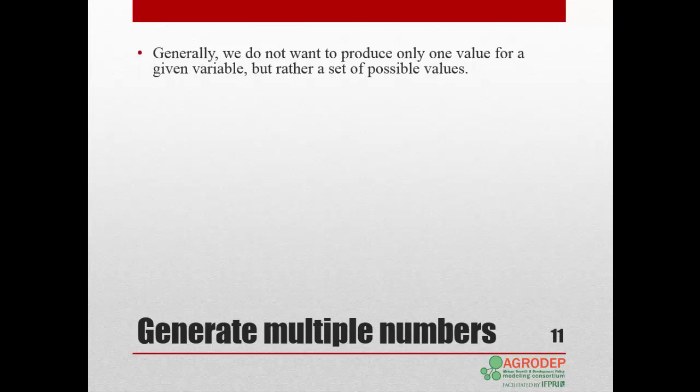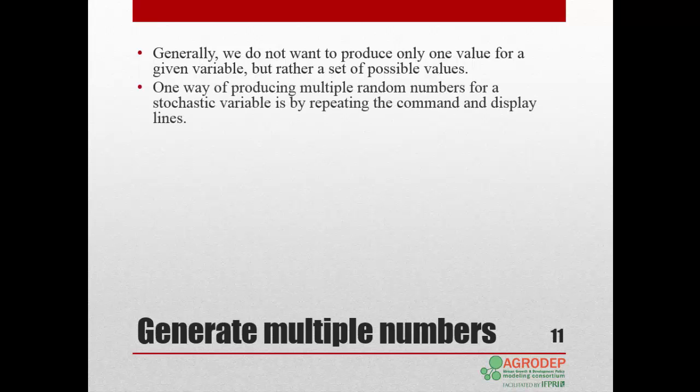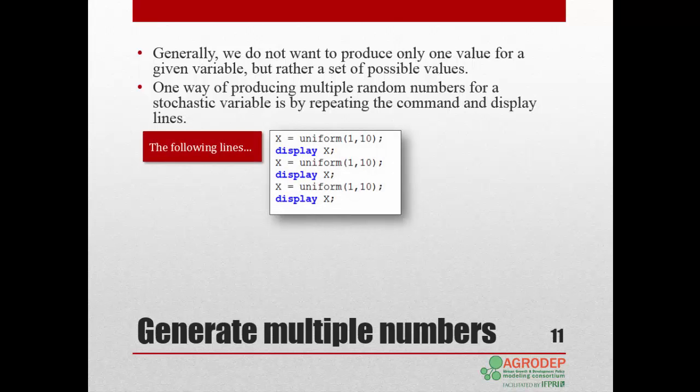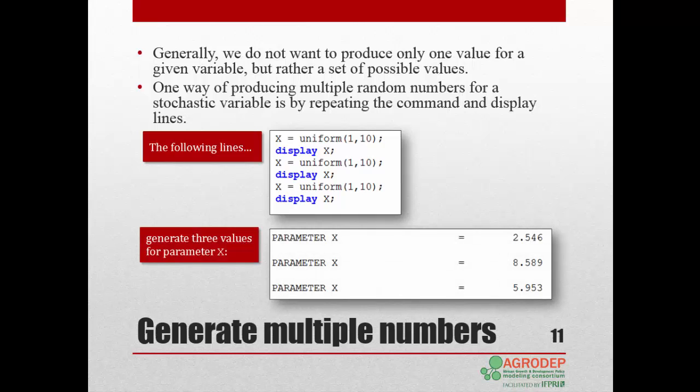Most likely, we do not want to generate a single random number for a given variable, but rather a series of random numbers. One way we can produce multiple random numbers for a stochastic variable is to repeat the distribution statement multiple times. So, the following code would generate 3 random values for parameter X: 2.546, 8.589, and 5.953. Again, the same code could draw different random values on your computer.